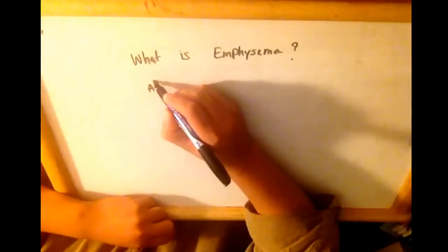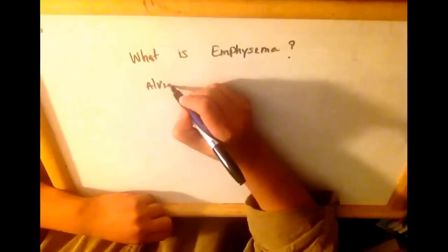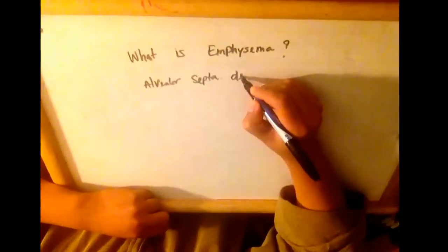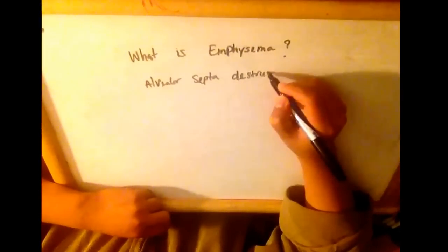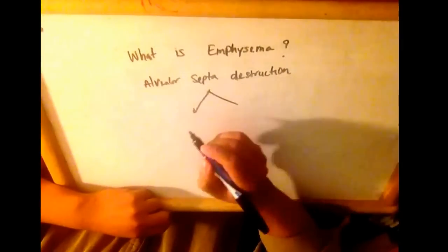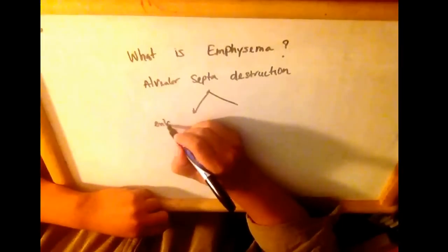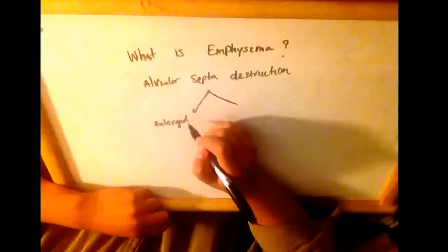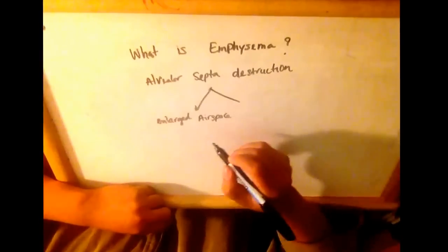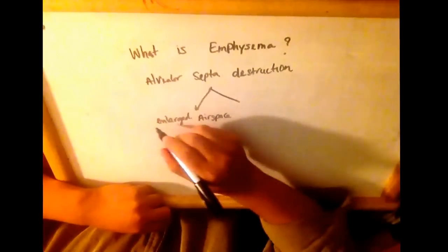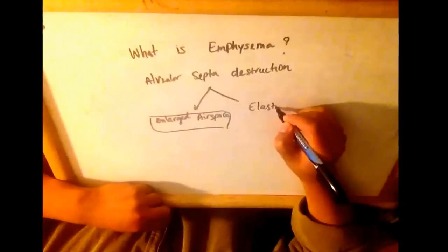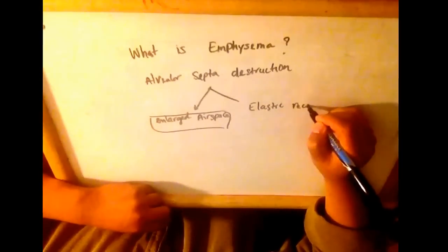So it is caused by alveolar septa destruction, and that leads to enlarged airspace. And also there is elastic recoil loss.